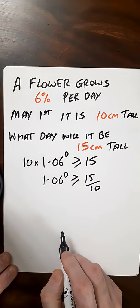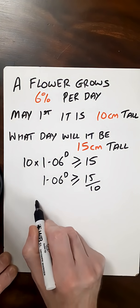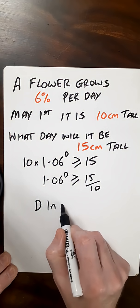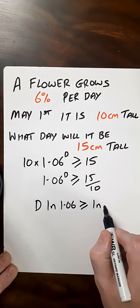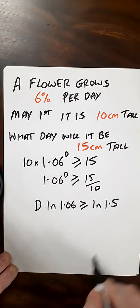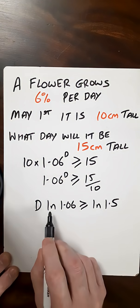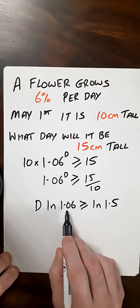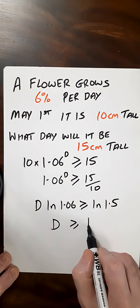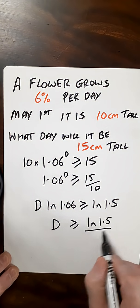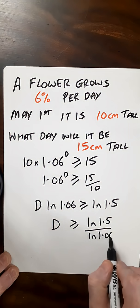Now we take the natural logarithm on both sides. So D natural log of 1.06 is greater than or equal to the natural log of 1.5. Now we can divide by natural log of 1.06 on both sides. So now D is greater than or equal to natural log of 1.5 over the natural log of 1.06.